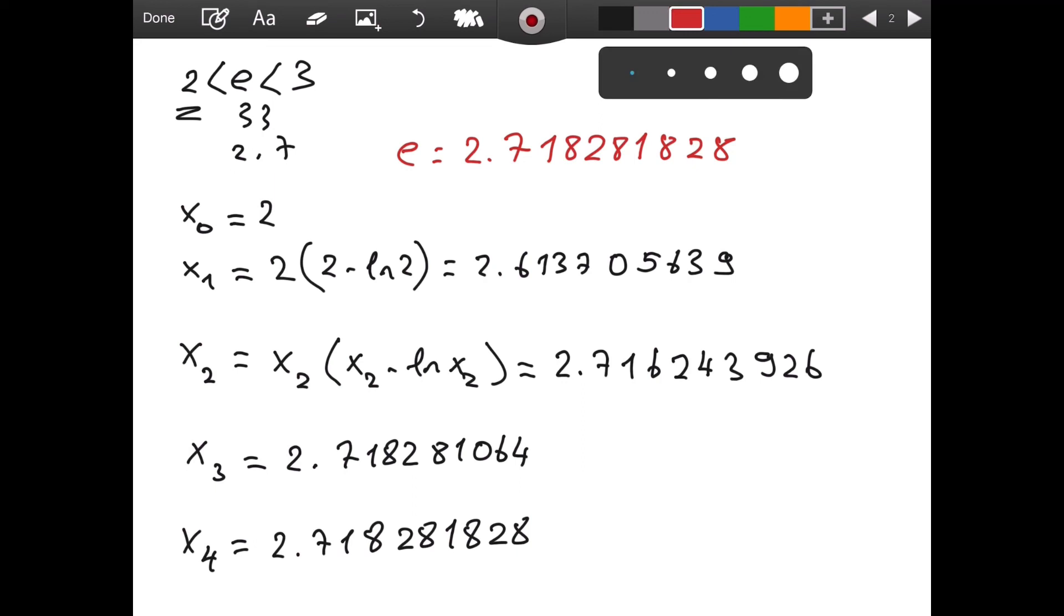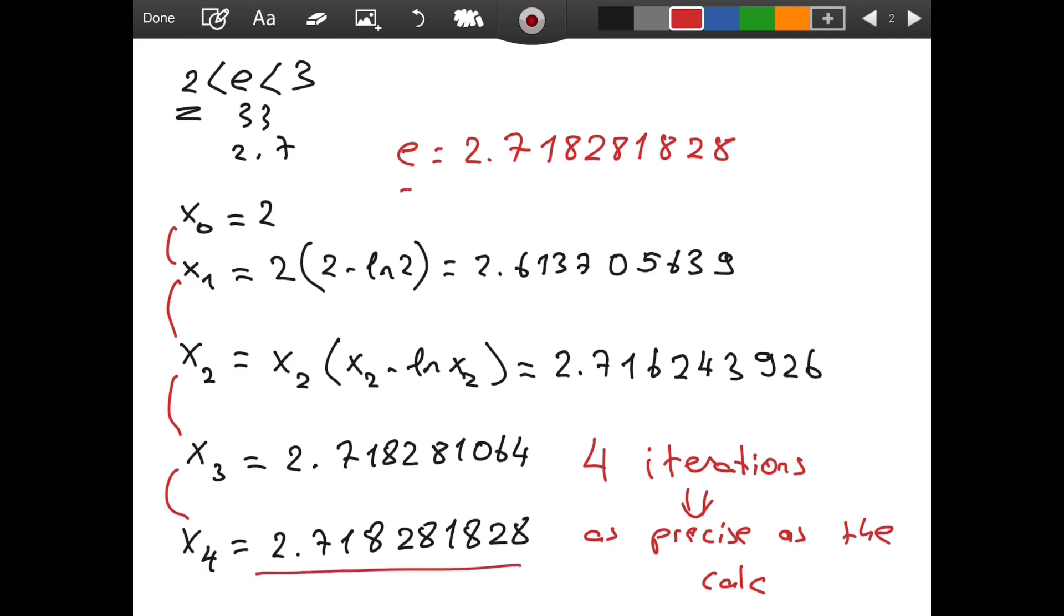And it took us, let's see, 1, 2, 3, 4. It took us 4 iterations. And that was the case with pi as well. So, using 4 iterations, we were as precise as the calculator that we were using. At least the calculator that I am using. Because, as you can see, the value that we got completely matches the value that we see on our calculator when we type e.